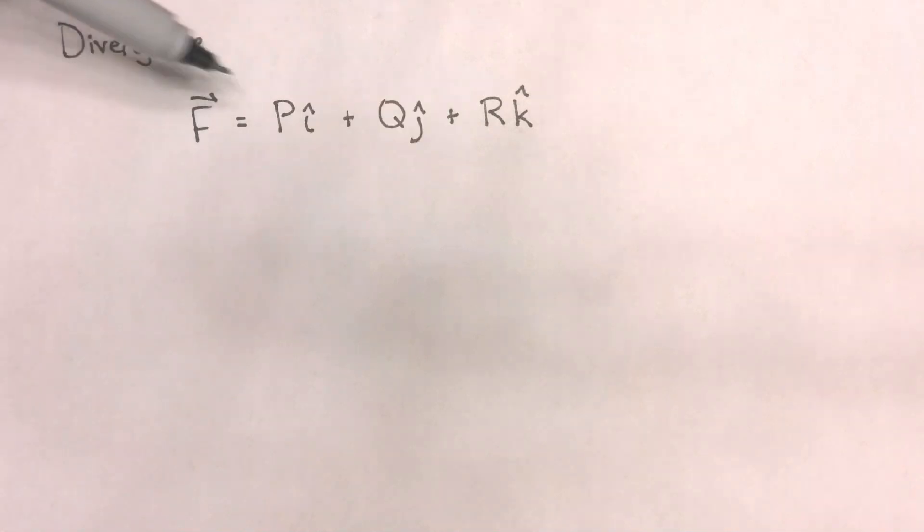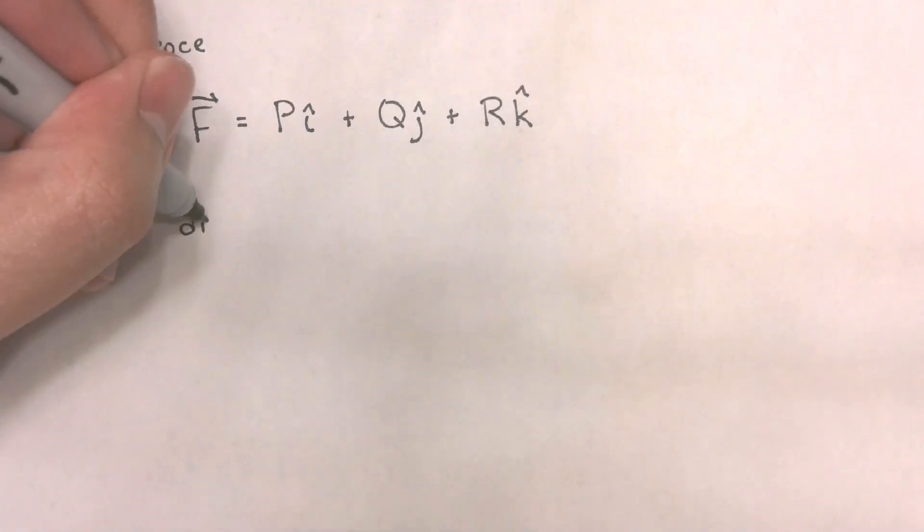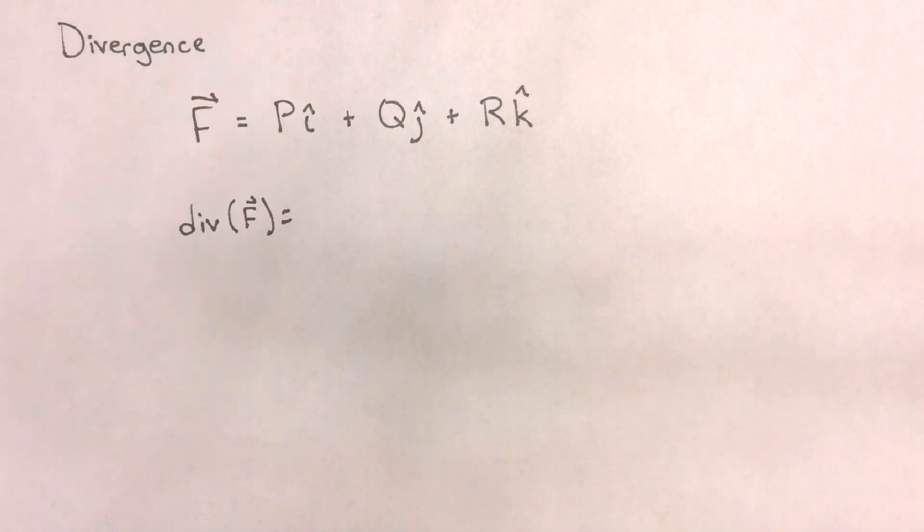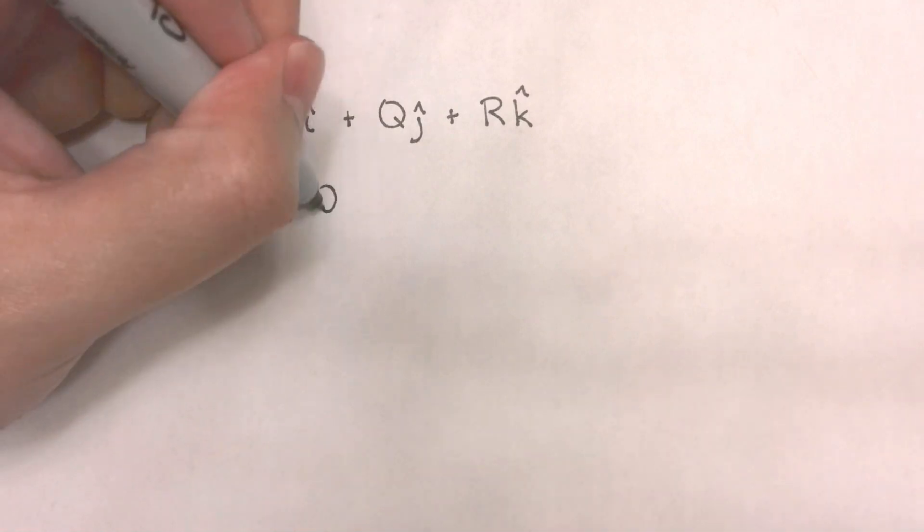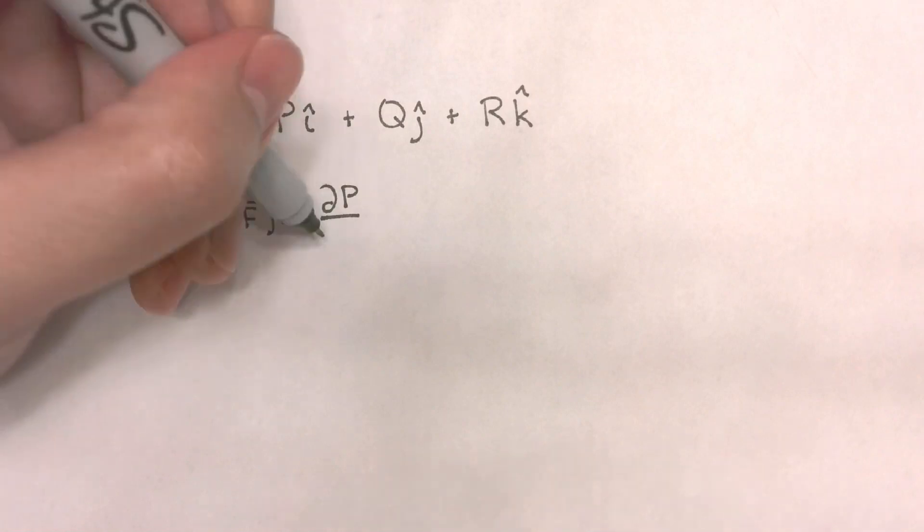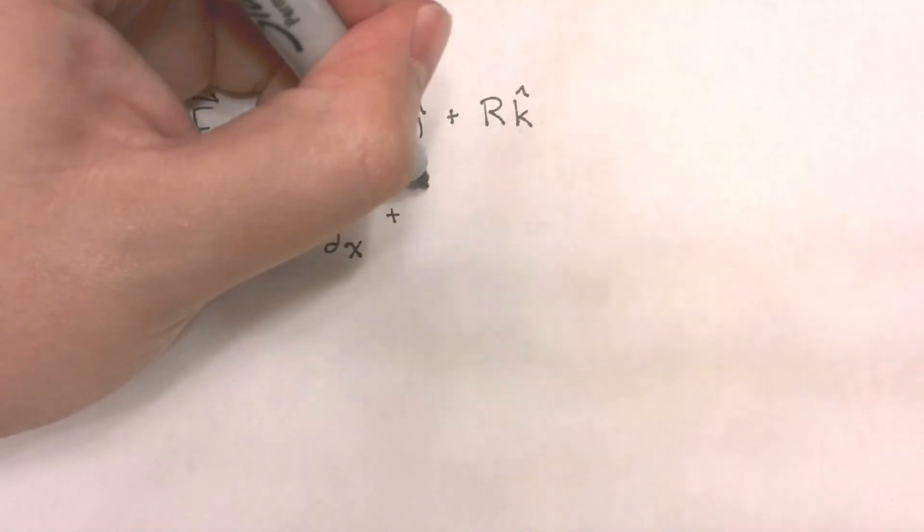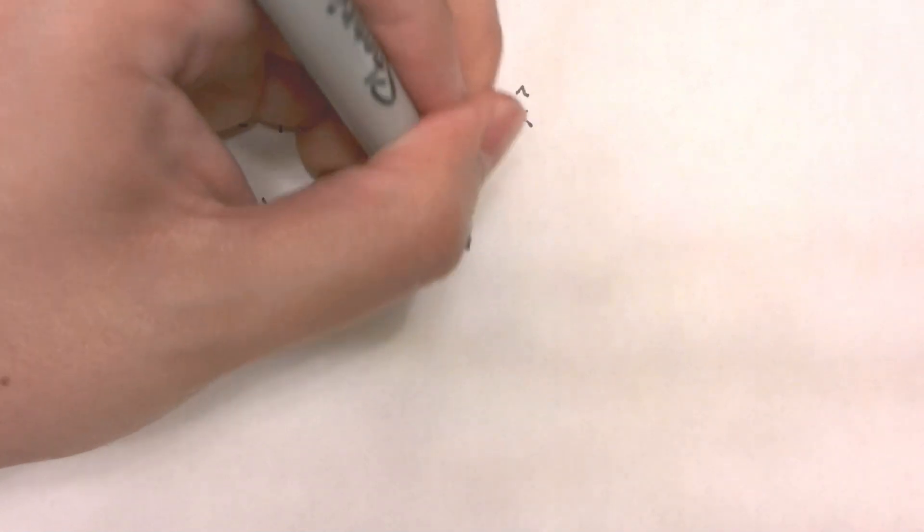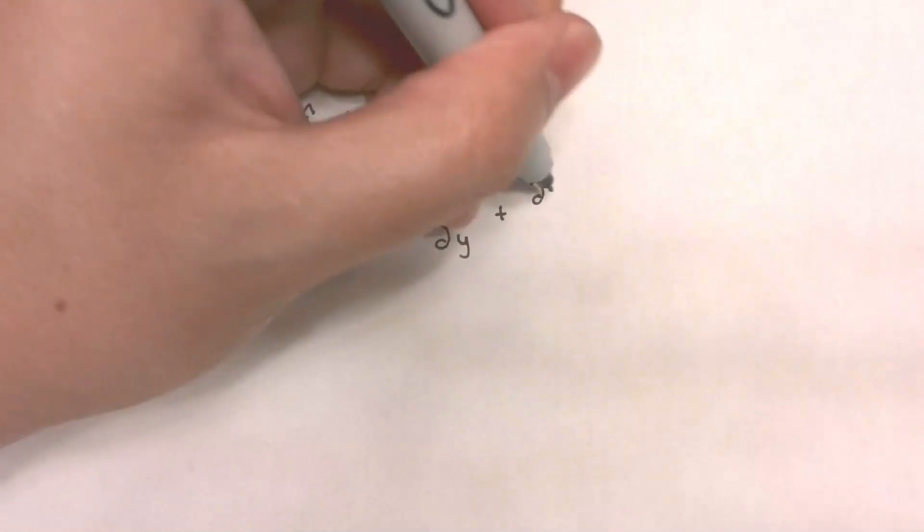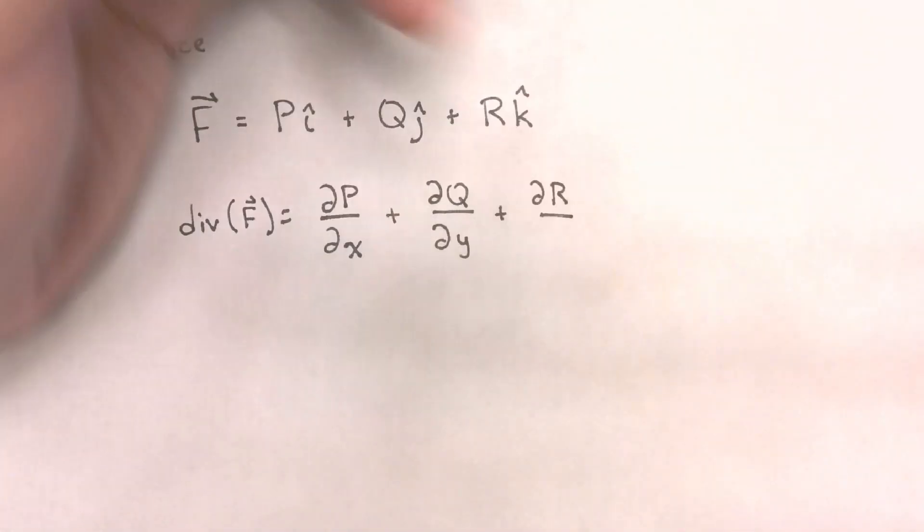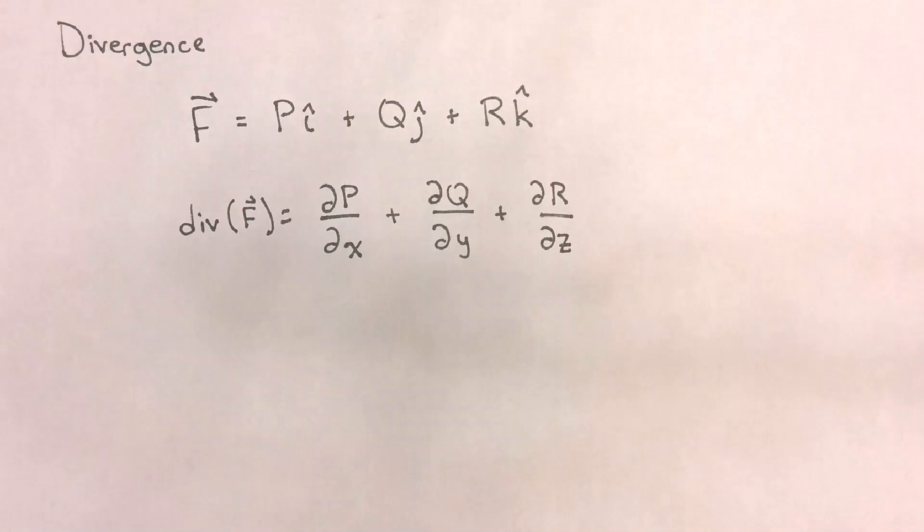If we define our vector in this way, then the divergence of the vector f is found by taking the partial derivative of the x component p with respect to x, the partial derivative of the y component q with respect to y, and the partial derivative of the z component r with respect to z.